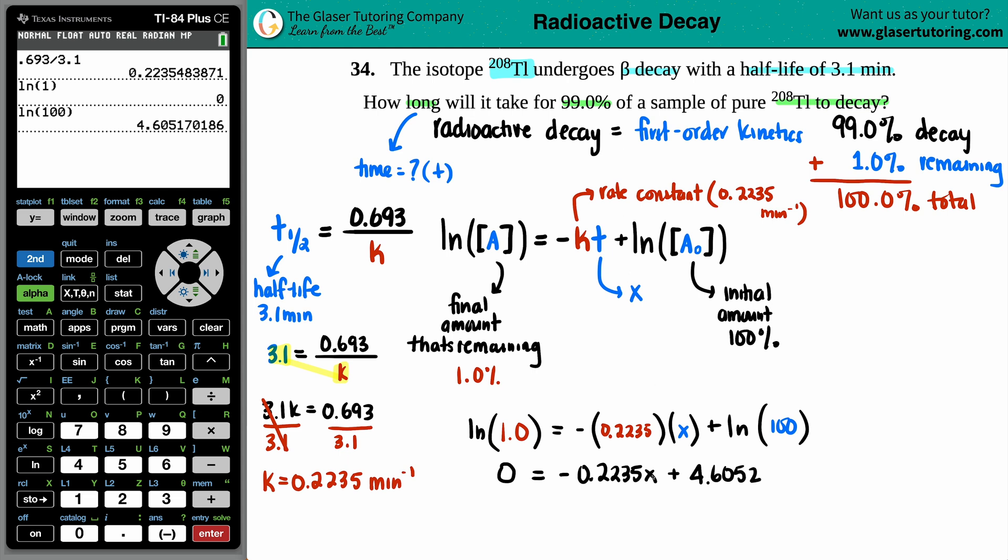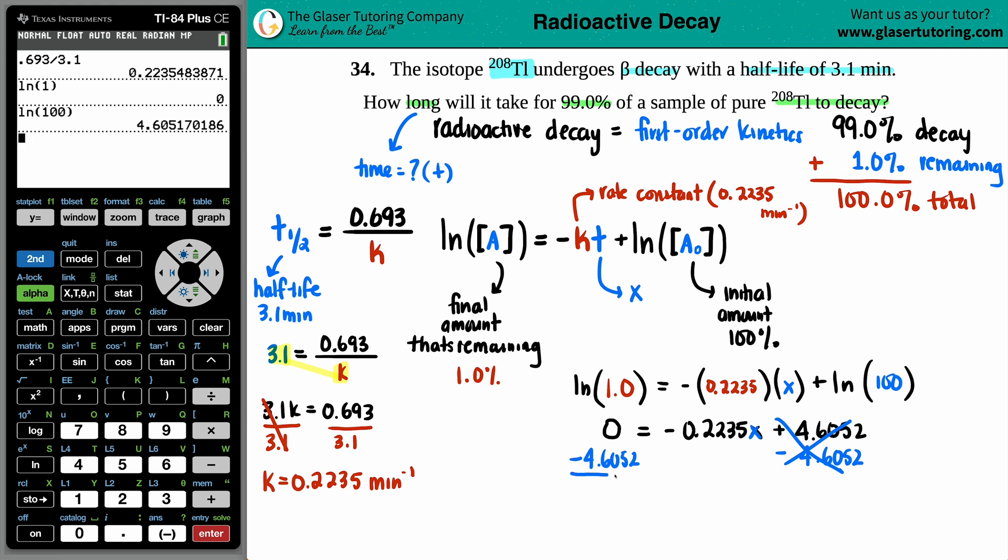We want to solve for that time. So I'm going to subtract 4.6052 on both sides. 4.6052. That gets rid of this. And we get negative 4.6052 equals negative 0.2235 X. Divide by that on both sides. And then we have our X value. And that's going to be the time it takes. Until this gets canceled. Goodbye. X equals. So this number, I can just divide by the positive value. So 0.2235. But if you wanted to make this negative, divide it by the negative 0.2235. It's the same exact thing.